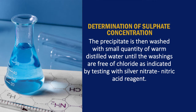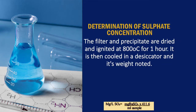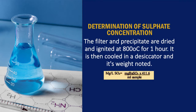The pulp aids filtration and reduces the tendency of the precipitate to creep. The precipitate is then washed with small quantities of warm distilled water until the washings are free of chloride, as indicated by testing with silver nitrate. The filter and precipitate are dried and ignited at 800 degrees centigrade for one hour, then cooled in a desiccator and weighed. Sulfate in mg per liter equals barium sulfate in grams multiplied by 411.6, divided by the sample volume.